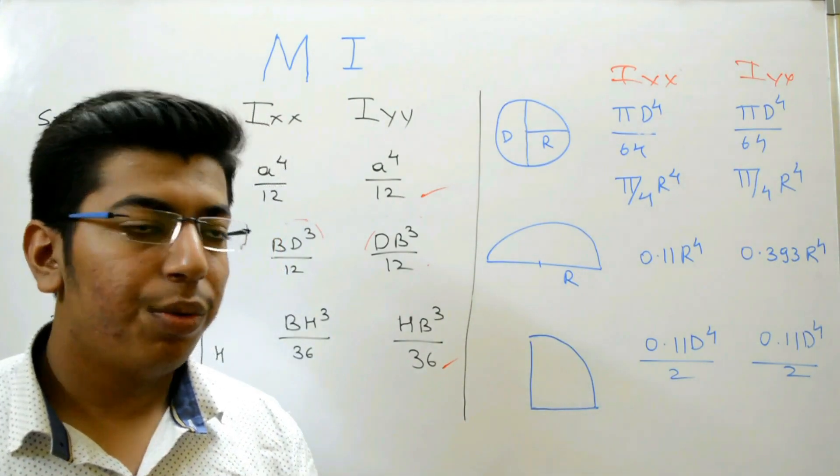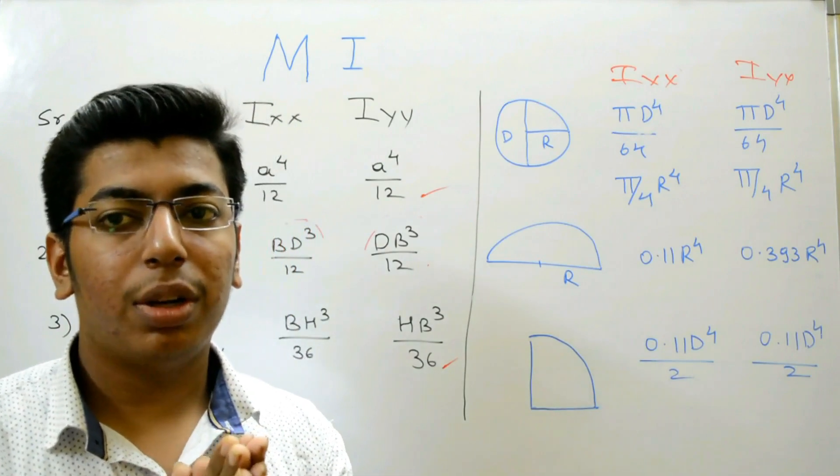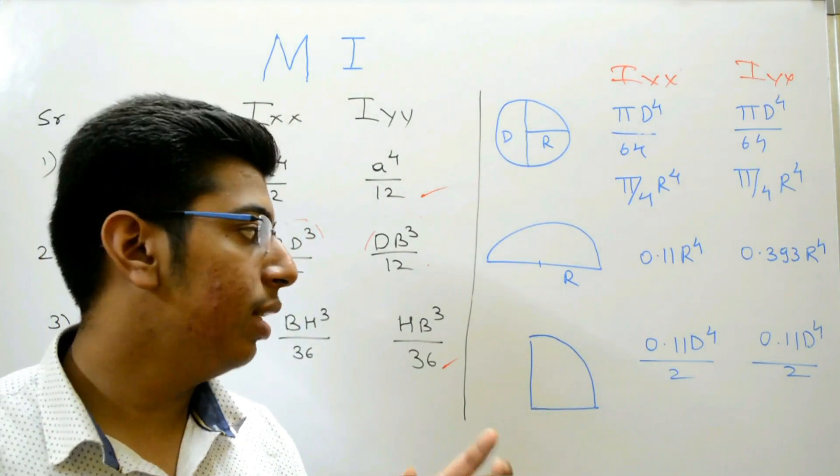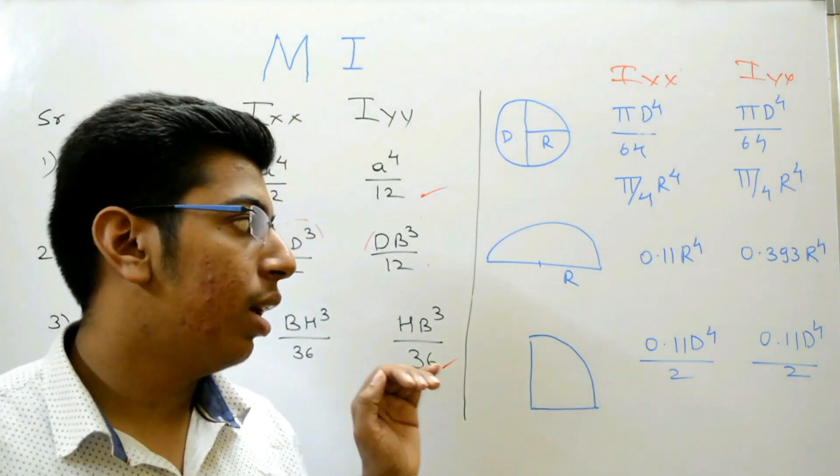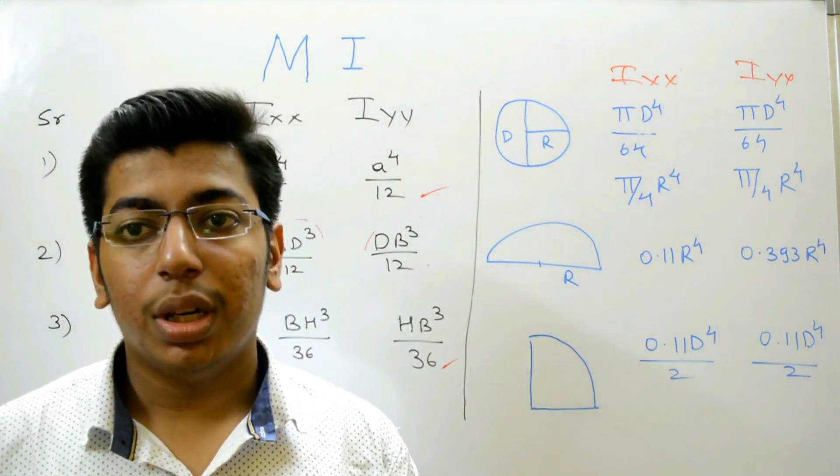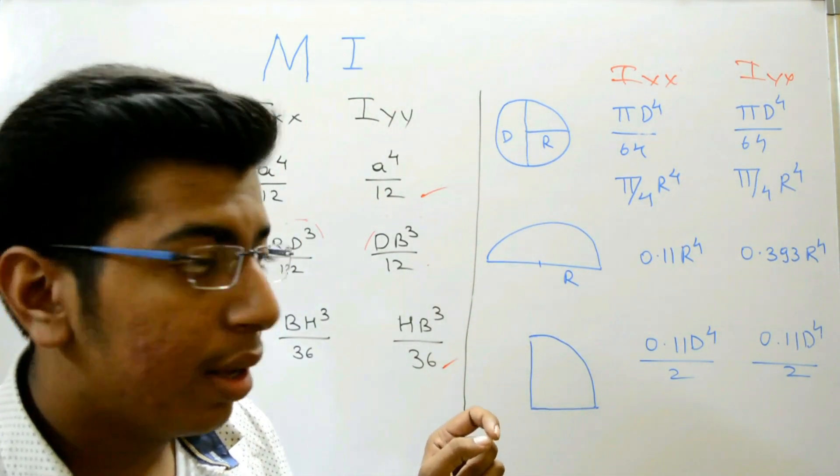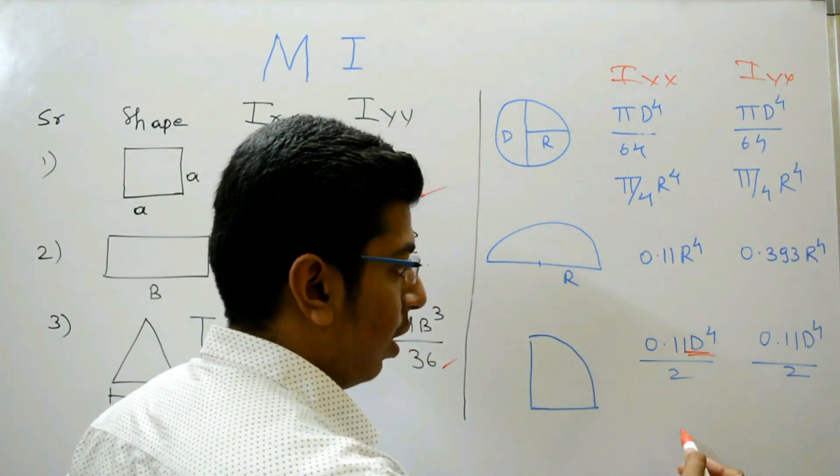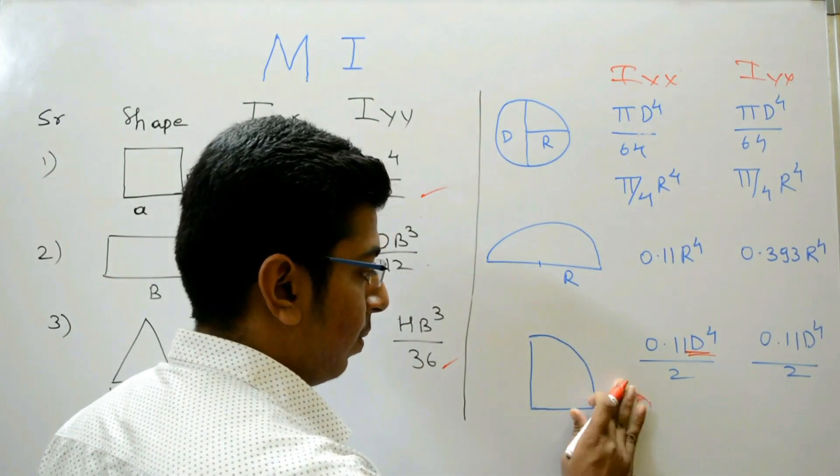Now moving further, our next shape is quarter circle. The moment of inertia of the quarter circle along x-axis is 0.11 D raised to 4 upon 2 and along y-axis is 0.11 D raised to 4 upon 2. Remember here that this is not R. This is D, that is, diameter.